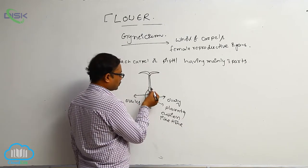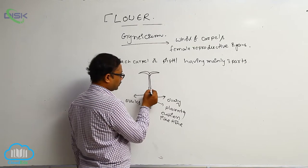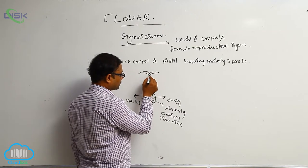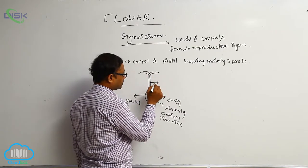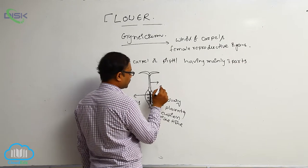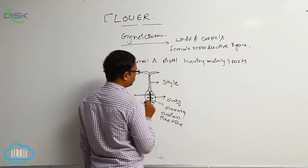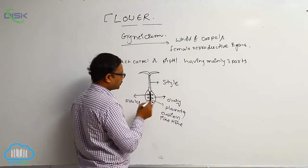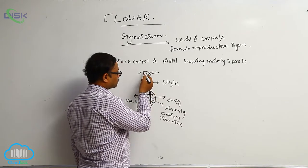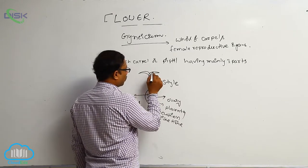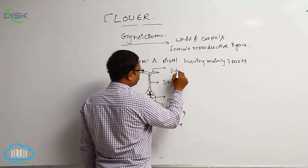Above the ovary there is a long neck-like structure. This long neck-like structure is known as the style. It is the middle portion of that carpel. Above the style, there is a broad-like structure that is known as the stigma.